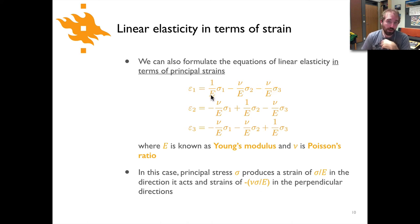Here we have 1 over E times sigma 1, and then minus, and this is the Greek letter nu, lowercase nu, over E times sigma 2, and minus nu over E times sigma 3. The same pattern holds true for epsilon 2 and epsilon 3.